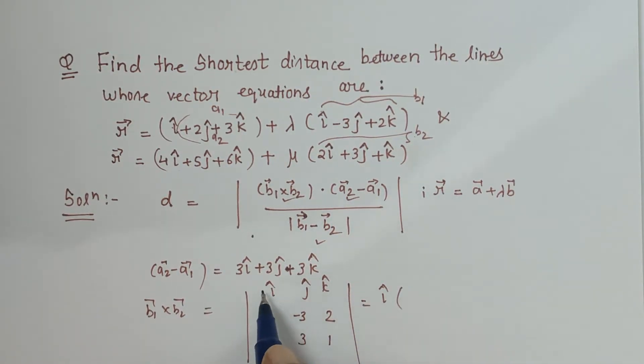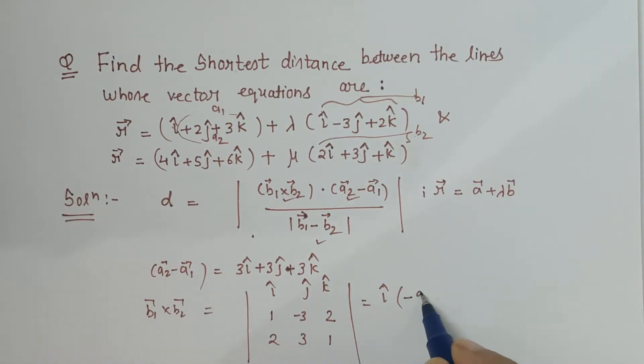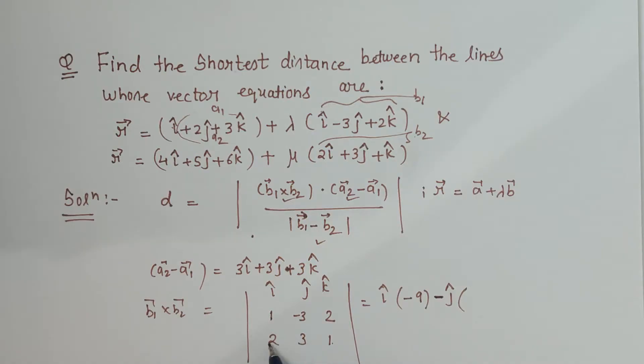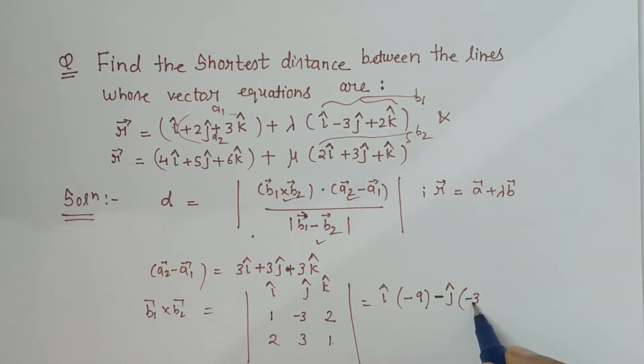Now i cap times this into this minus this into this, so minus 3 minus 6 gives minus 9. Then minus j cap, it is the centermost, we always put negative sign for this, and again eliminate the corresponding row and corresponding column. Then this into this minus this into this, that is 1 minus 4 gives minus 3.